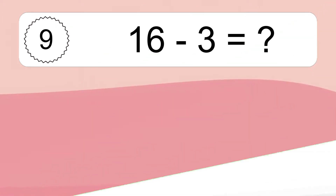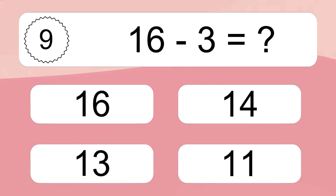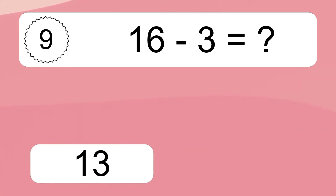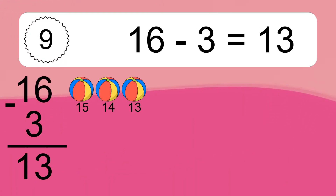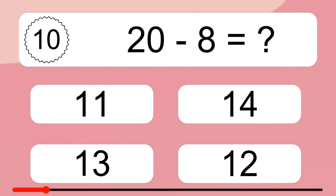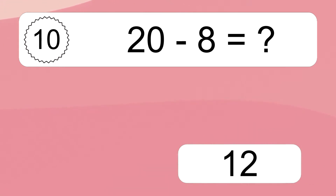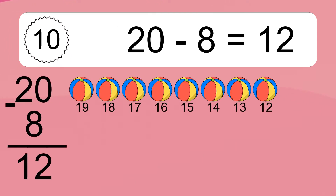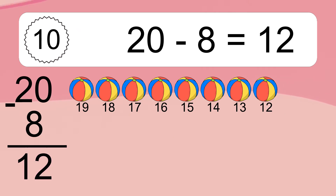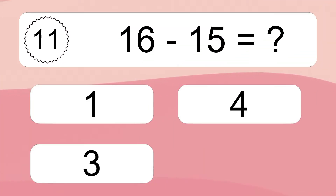16 minus 3 equals what? 16 minus 3 equals 13. Let's count it: 15, 14, 13. 20 minus 8 equals what? 20 minus 8 equals 12. Let's count it: 19, 18, 17, 16, 15, 14, 13, 12.